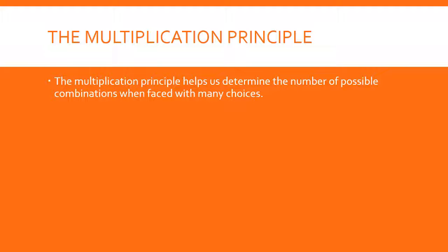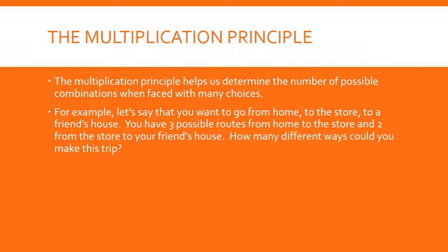The multiplication principle helps us determine the number of possible combinations when we're faced with many choices. For example, let's say you want to go from home to the store and then to a friend's house. Let's say that you have three possible routes from home to the store and then two from the store to your friend's house. How many different ways could you make this trip?